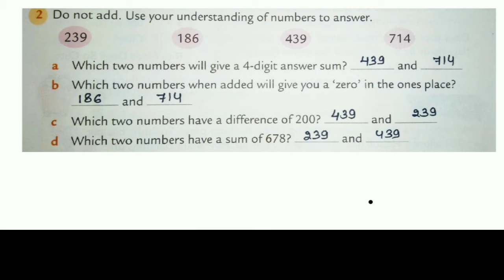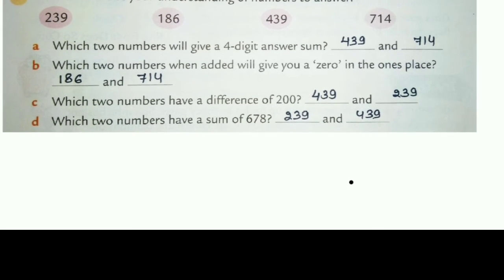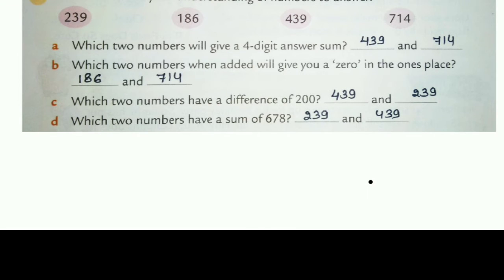Now we start second question. Do not add, use your understanding of numbers by answer. We don't have to add, simply we have to check and understand the number, which number we will write in the blank. See, first question, which two numbers will give a four digit answer sum?